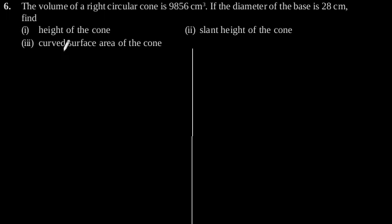Exercise 13.7 Question number 6. The volume of a right circular cone is 9,856 cm³. If the diameter of the base is 28 cm, find first height of the cone.